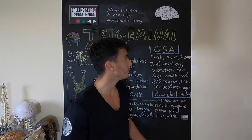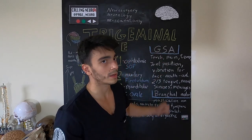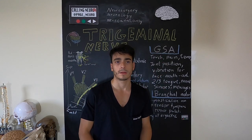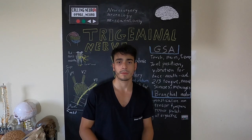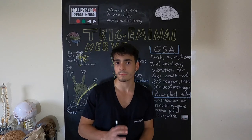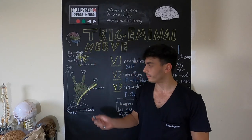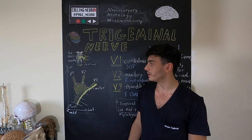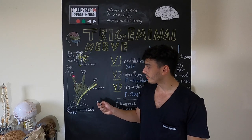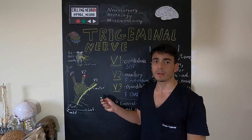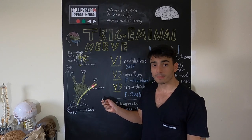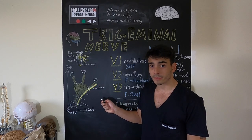The other part of the nerve is the GSA, general somatic afferent. Basically, the nerve itself has three main divisions: V1, V2, and V3. V1 stands for ophthalmic, V2 for maxillary, and V3 for mandibular.